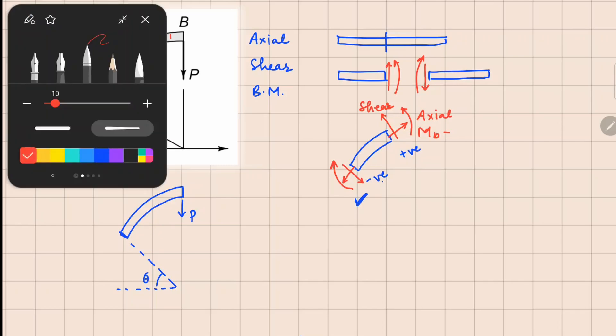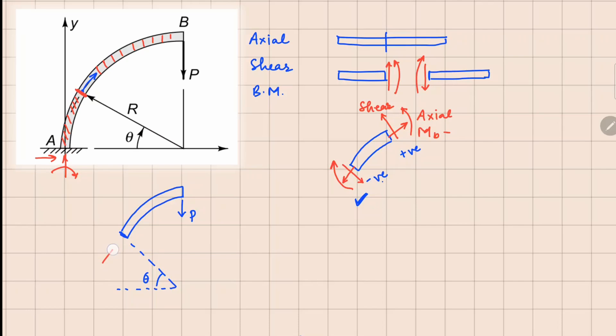So we can apply the unknown axial force in this direction, your unknown shear force going this way and your bending moment going in this direction. So let's put names there. This is your V, this one is your F and this one is your M_B.